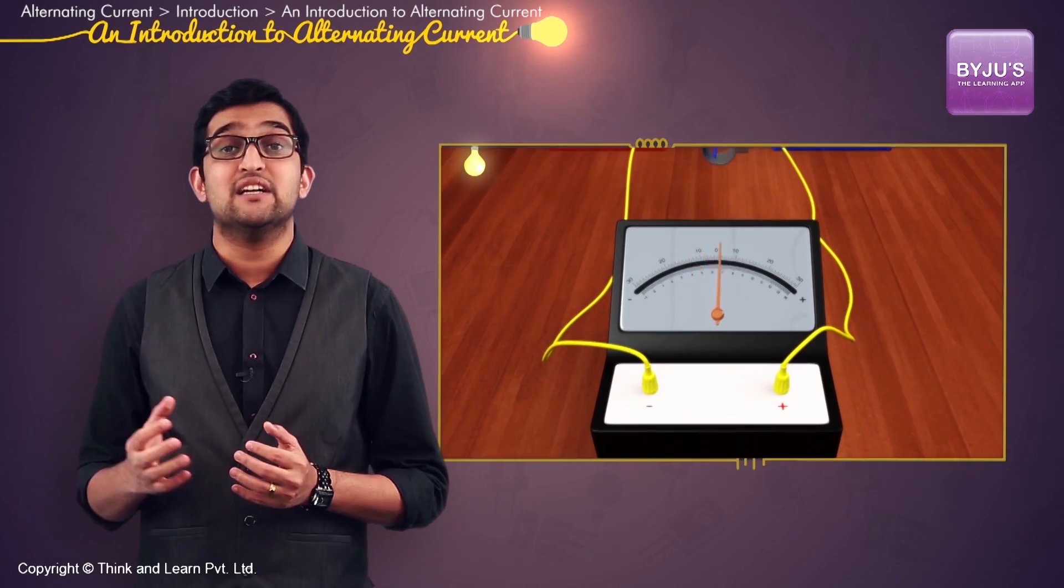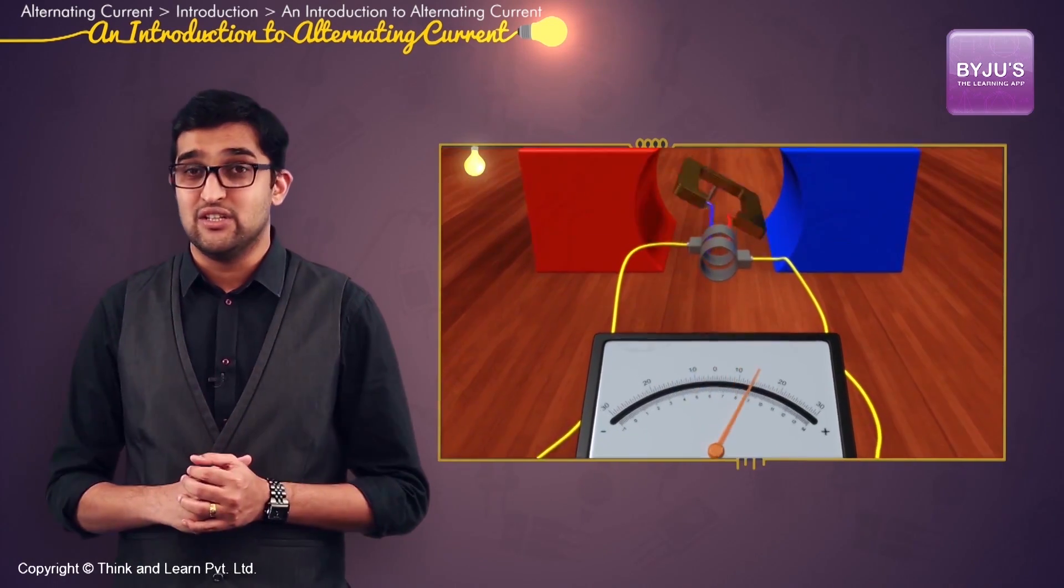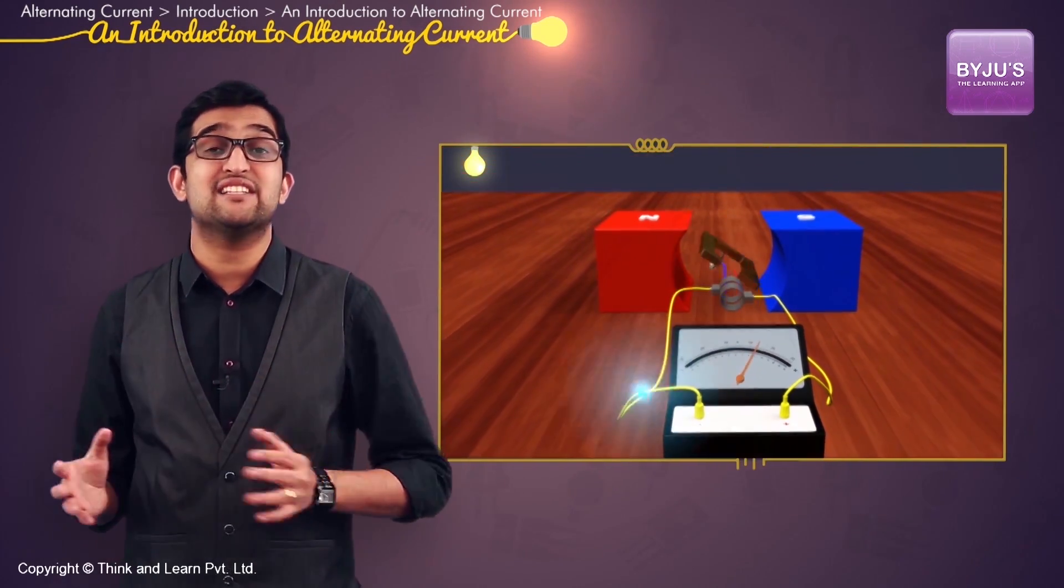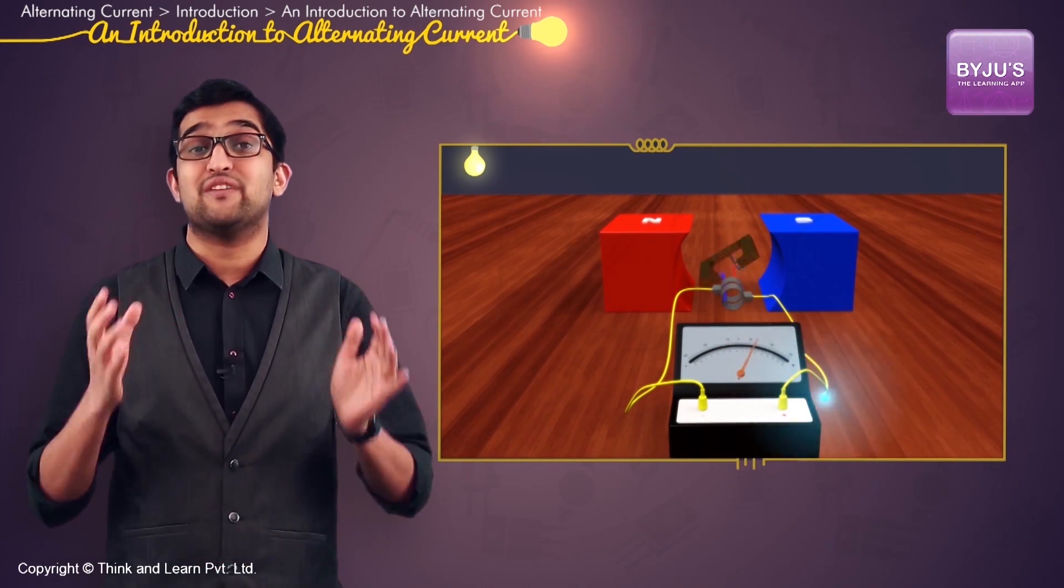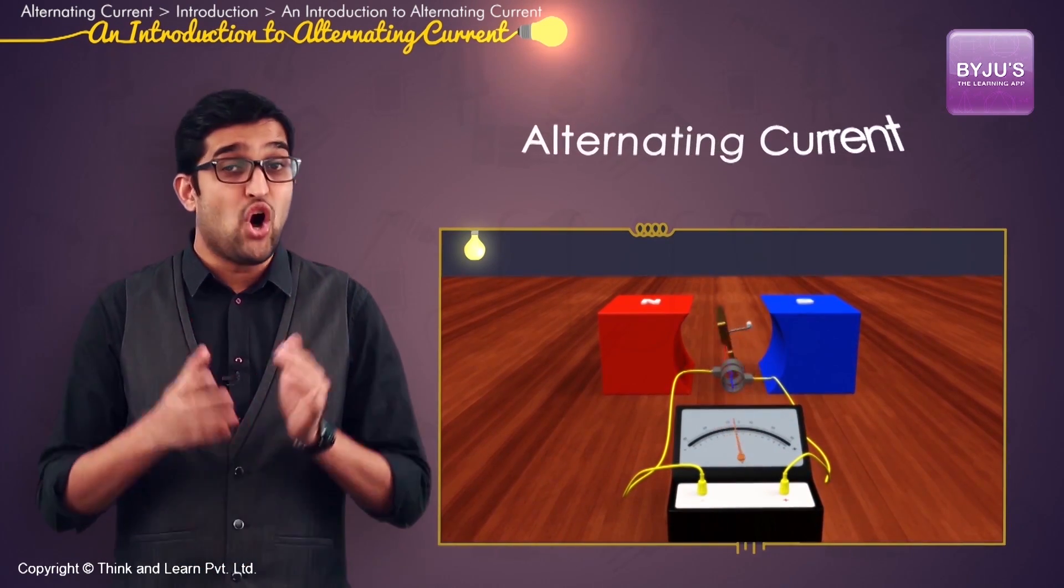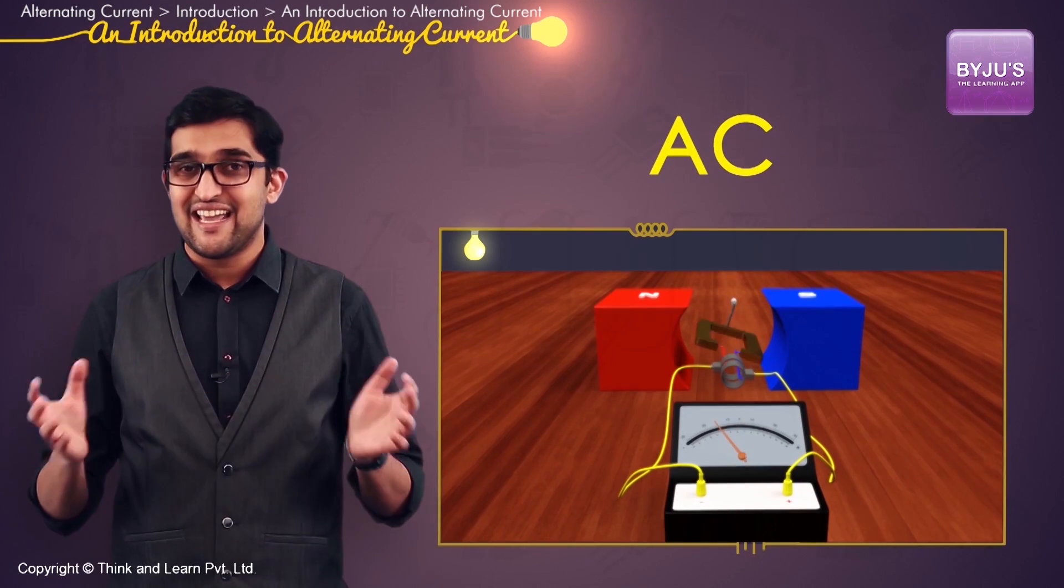You already have learned about the generation of electricity by a generator, either as a voltage switching polarity or as a current switching directions back and forth. This kind of electricity is called alternating current or AC.